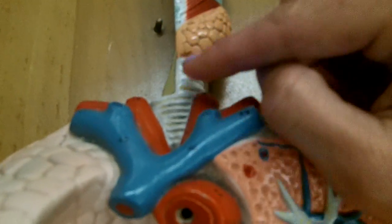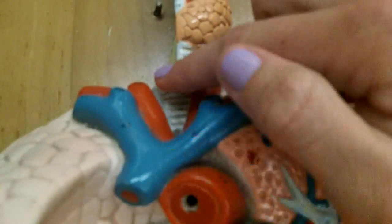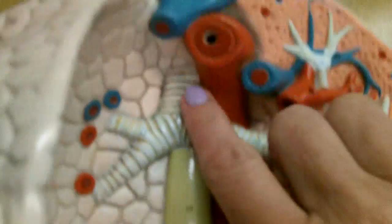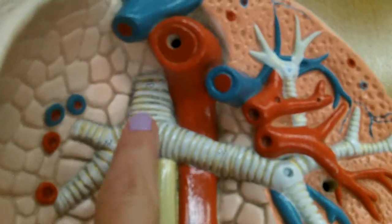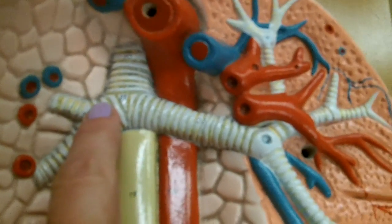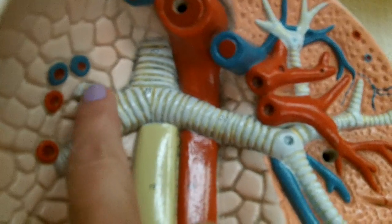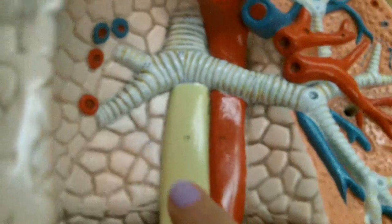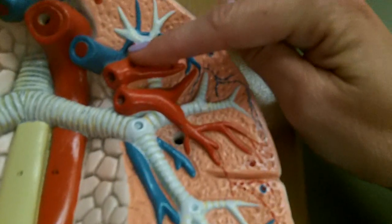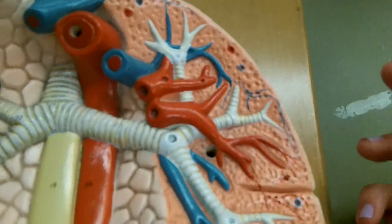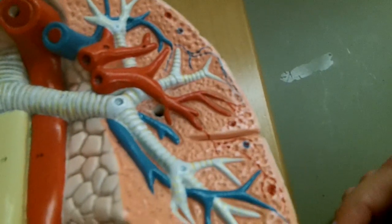Right there. And then here we see the trachea. And as we move to the trachea down here, we see it bifurcates into the right and left primary bronchi. And then you can see them further branching into secondary bronchi, and then out here it would be tertiary bronchi and then progressively smaller bronchioles.